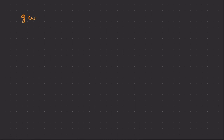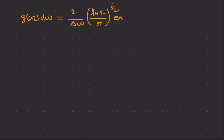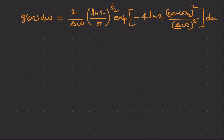Therefore we get the final line shape function: G(Ω) dΩ = (2/ΔΩ)(ln 2/π)^(1/2) × exp[−4 ln 2 × (Ω − Ω₀)²/ΔΩ²] dΩ. This is the line shape function for the Doppler broadening.